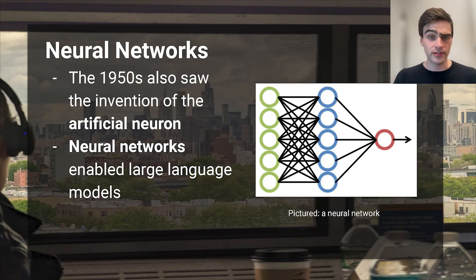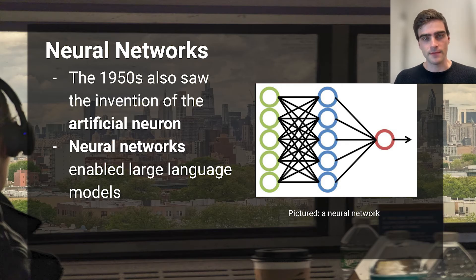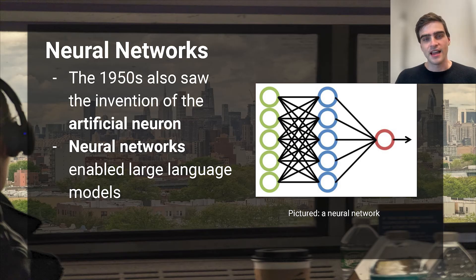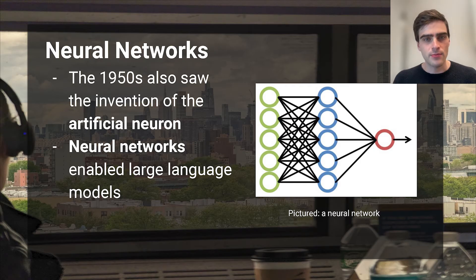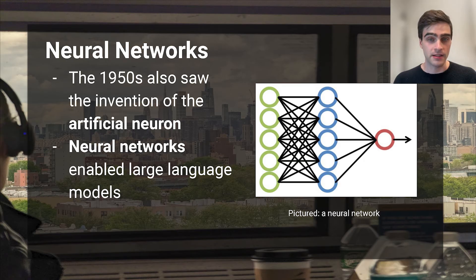How does this relate to artificial intelligence? Well, when Claude Shannon was developing the language model in 1951, two more mathematicians developed the artificial neuron. And they showed that when you string many of these artificial neurons together, you get a neural network capable of teaching itself to model sequences of words. Neural networks let you make giant language models. And as it turns out, when you make big language models, they become intelligent too.